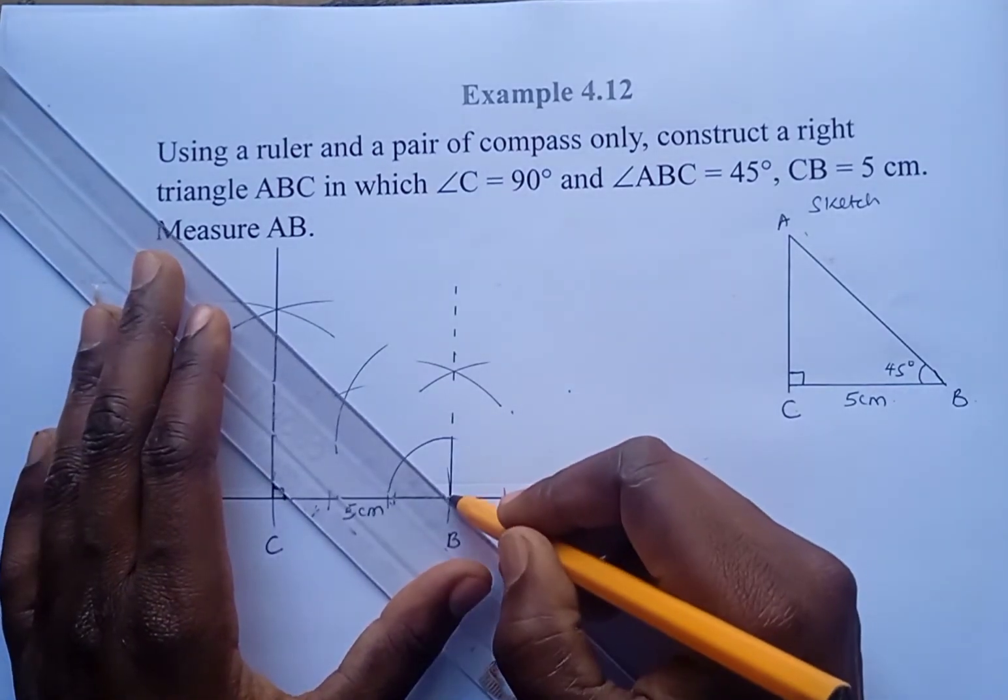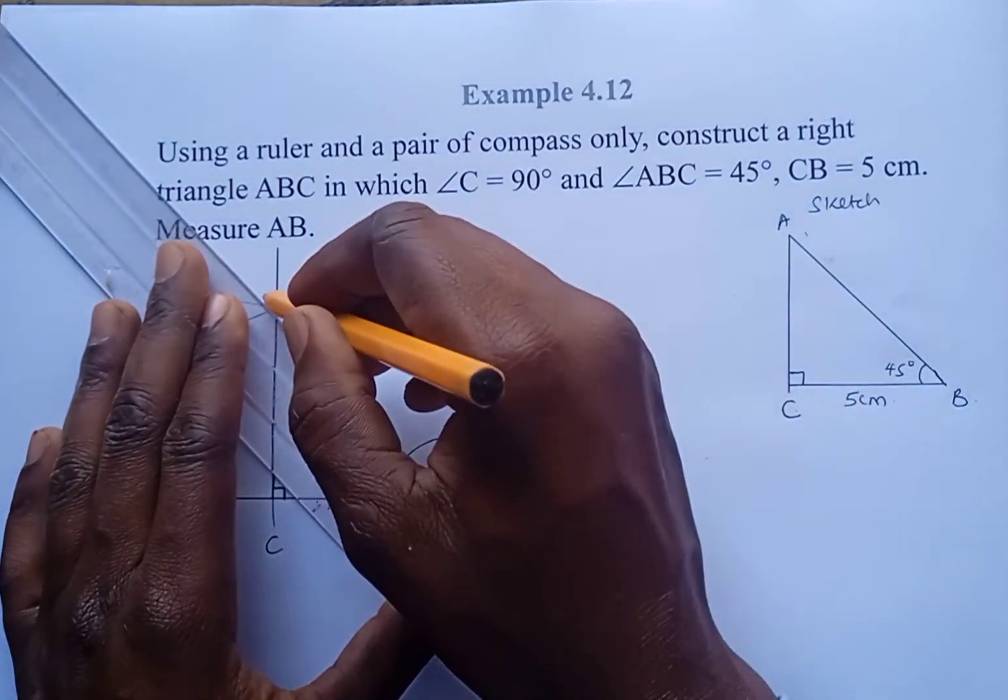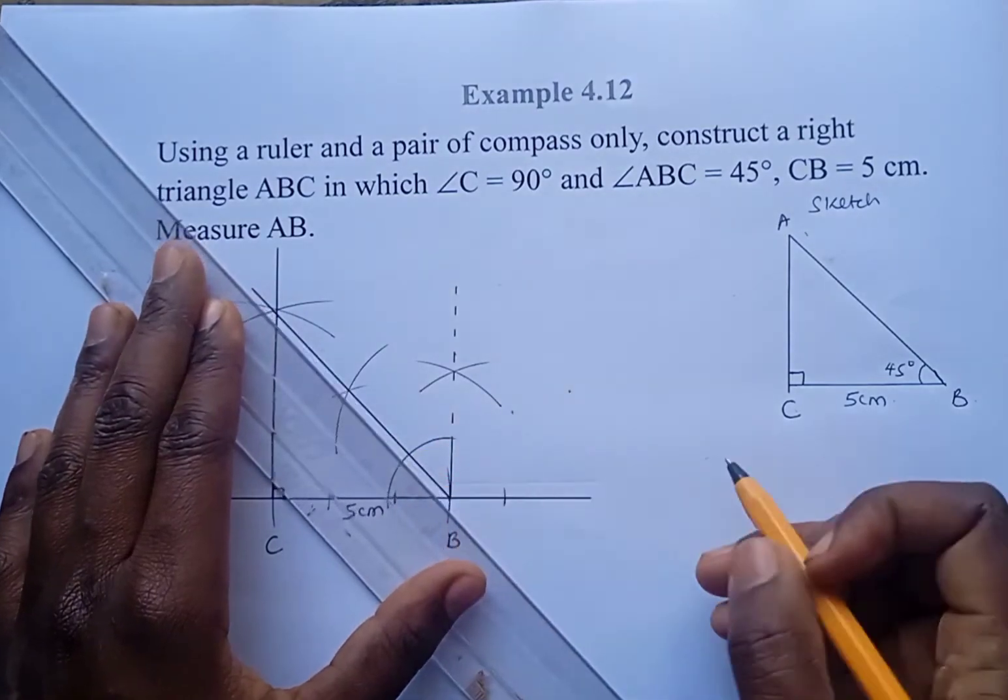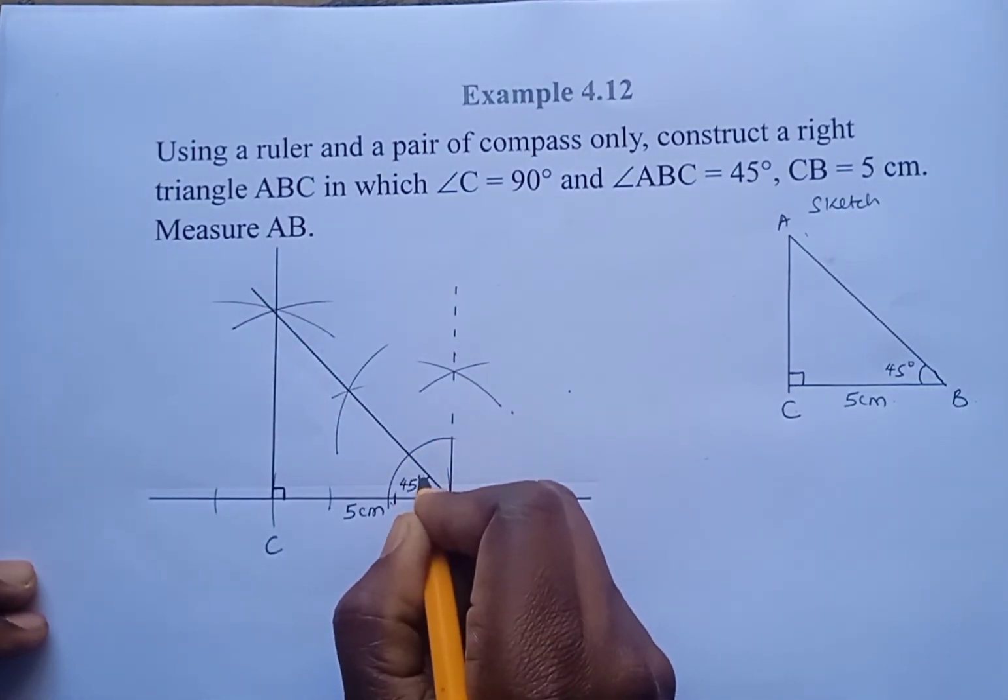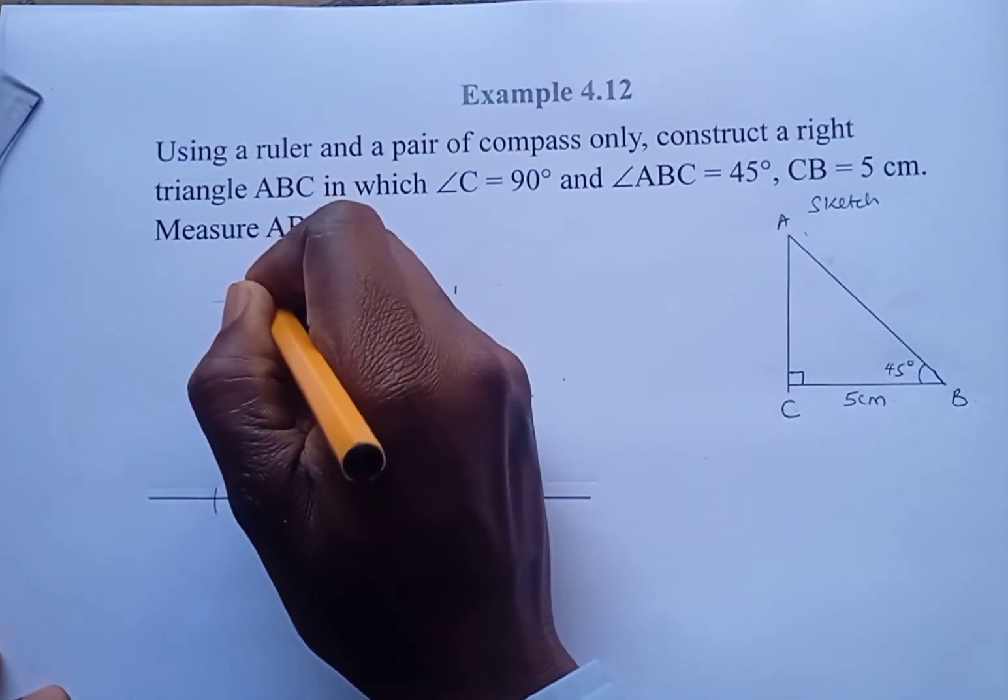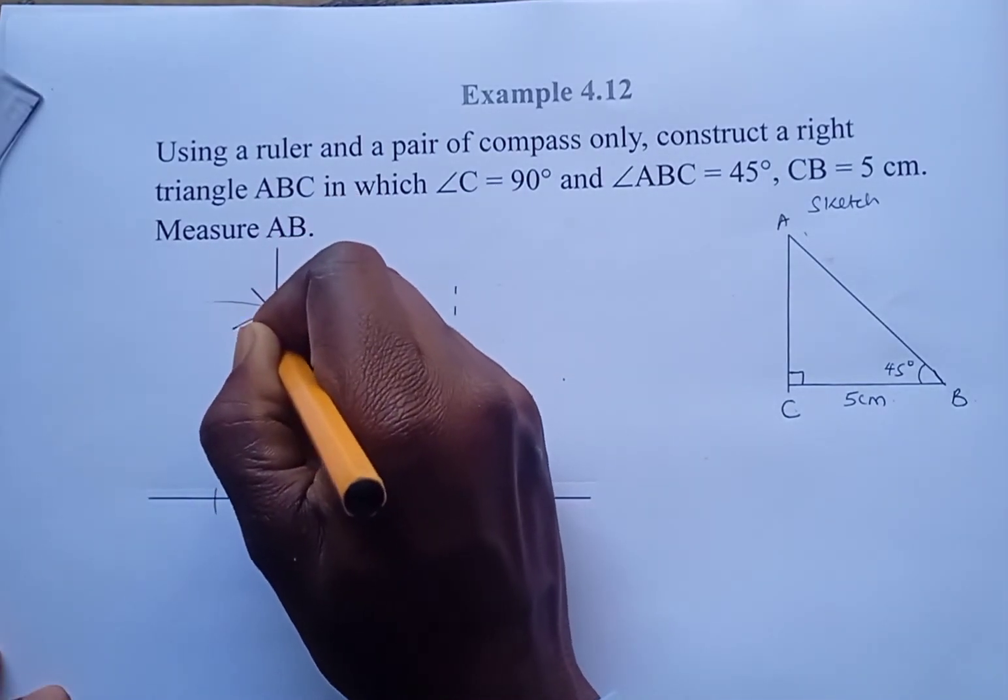So this is 45 degrees at B. So now we've constructed the triangle ABC.